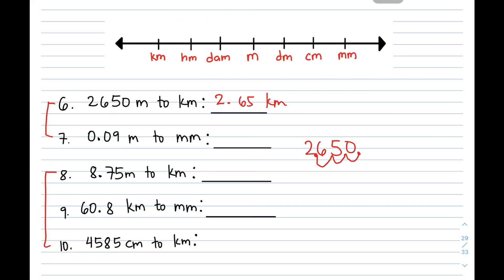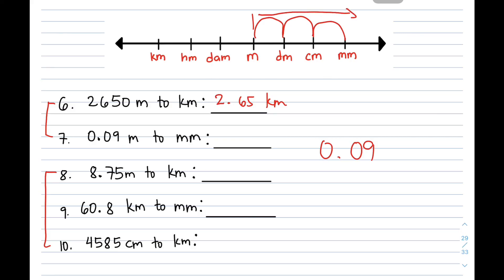Item number 7: convert 0.09 meters to millimeters. Starting at meters, we count 1, 2, and 3 units from left to right. Moving the decimal point 3 places to the right and filling with a zero gives 90. So 0.09 meters equals 90 millimeters.